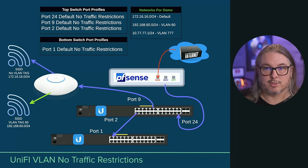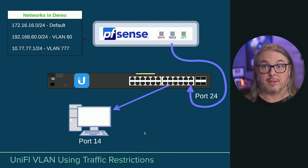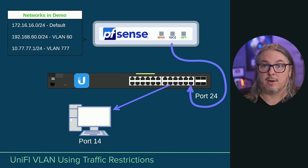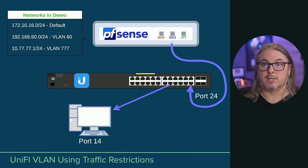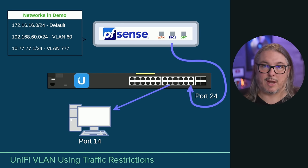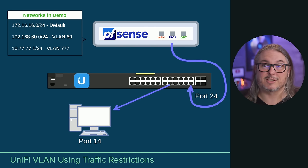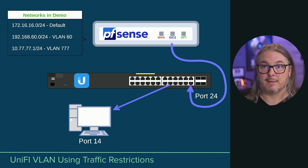Now let's talk about when to use traffic restrictions and where it's really important. If you have a computer, a camera, or any device attached to a specific port, this is definitely where you want traffic restrictions — the goal is to set that port to only the VLAN you want it to access. Using cameras as an example: if traffic restrictions are off, someone could plug into that port and even though it defaults to the camera network, it's actually still sending all VLANs. Let's show how this works in the port manager inside Unify.